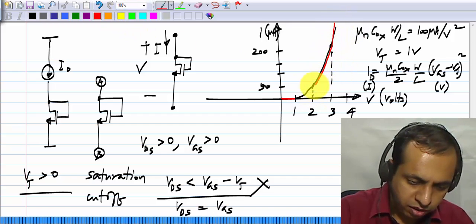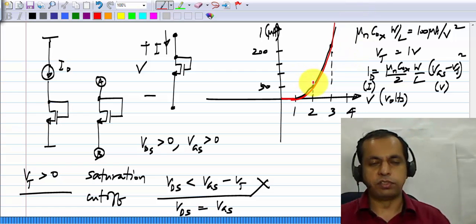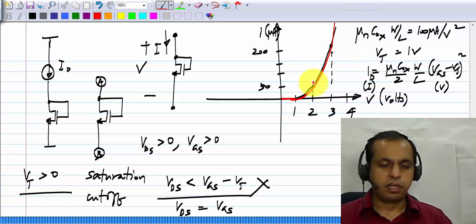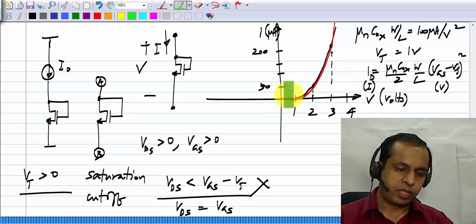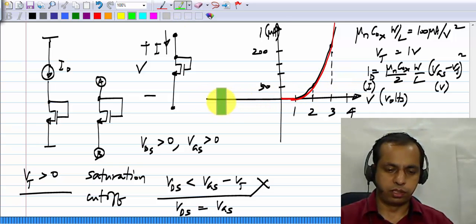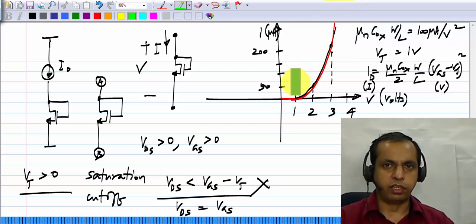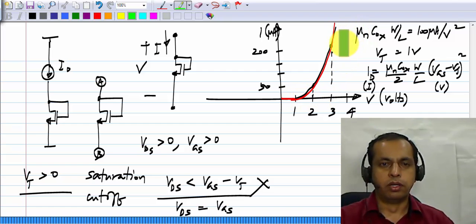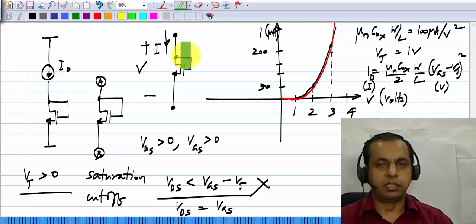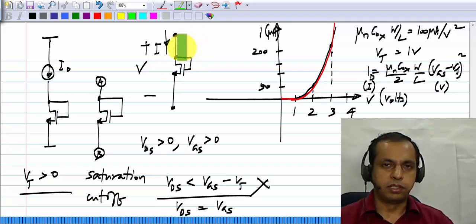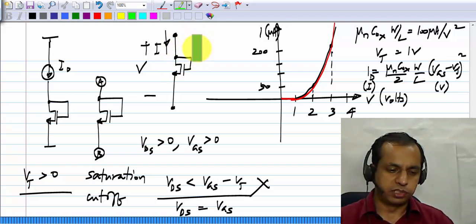These are the I V characteristics of the transistor, and this you recall is reminiscent of the diode. The diode also had some characteristic, where there was a very small current up to some point, and after that the current increases. Now, in case of the real diode, it increases exponentially, whereas here it increases only as square law. But this can be thought of as a two terminal element, which is the diode.